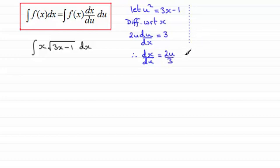Now as you know, you could work with that one, or you could make dx the subject. In which case, dx would equal 2u over 3 times du.